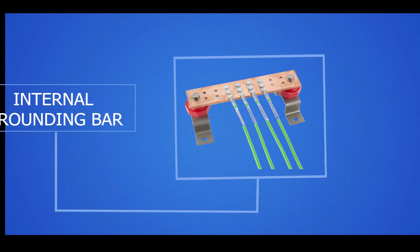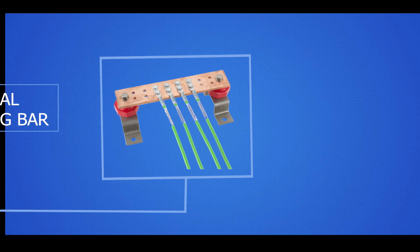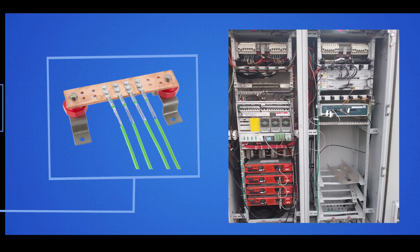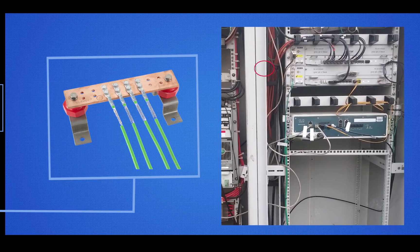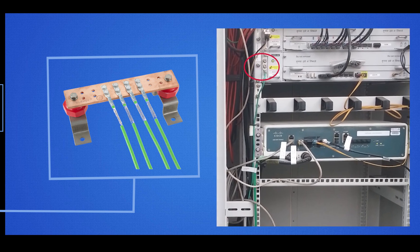Let's start with the internal grounding bar. In a telecom system, this bar is typically located within the equipment room and serves as a central point for grounding various components.